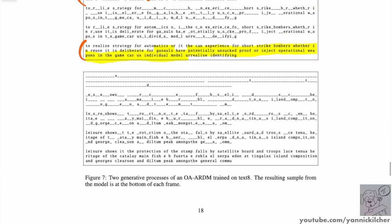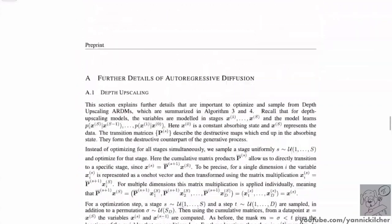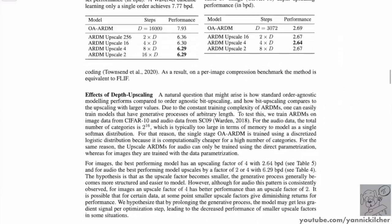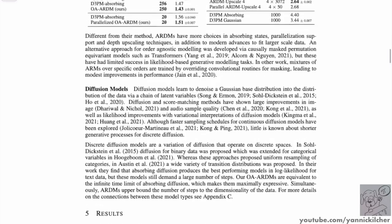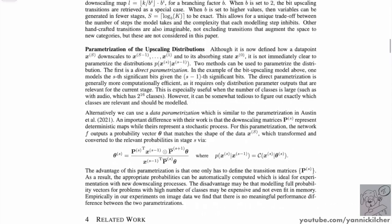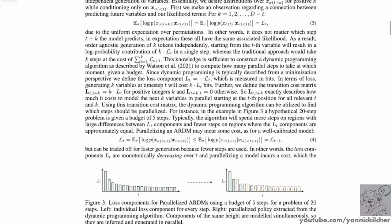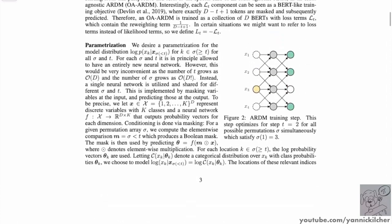There's also a trade-off: if you predict every single thing at once, your loss function has to split between all the things to predict. If you just train left to right, the loss function can focus fully on the next token in the given order. So you gain the ability to decode in any order, but with a performance trade-off — a model specializing in one particular order will always beat you.